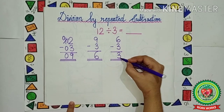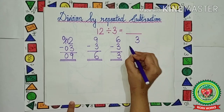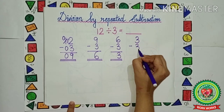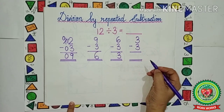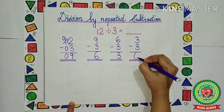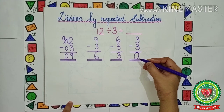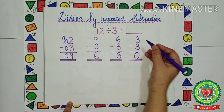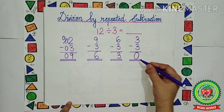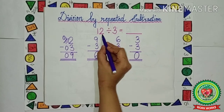Now the number is 3. We will minus 3 from 3. Let us write 3 minus 3. What is 3 minus 3? That is 0. Now see, we have got 0. I have already told you, until and unless we get a 0, our division is not over. So we have got 0. That means we have completely divided the number 12.